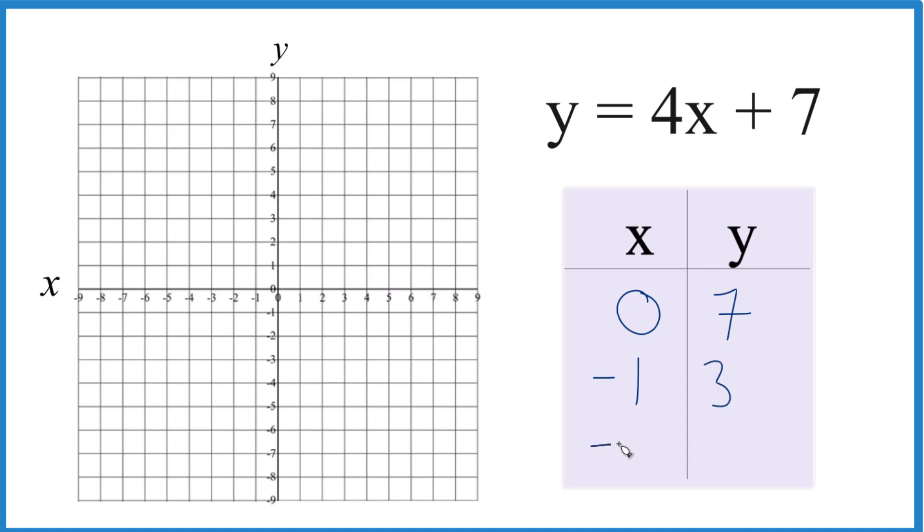Then I'll do negative, how about negative 2? 4 times negative 2, that's negative 8 plus 7. That gives us negative 1. So now we can graph these points for this equation here.